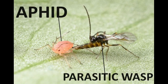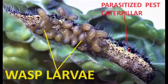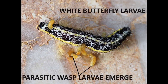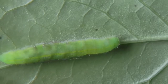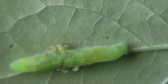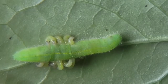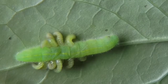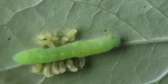Parasitic wasps: targeted pests are caterpillars, aphids, whiteflies, and scale insects. Parasitic wasps lay their eggs inside or on their host, with the developing larvae consuming the host from within, eventually killing it.